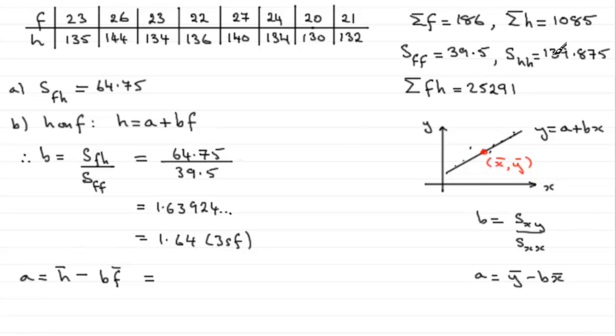Well, H-bar, the mean of H, is going to be the sum of H, divided by how many values we've got. So that's going to be 1085, divided by 8. And then we've got minus B, B being the value that we've just found. I'm going to use the unrounded version though, so it's 1.63924 and so on, multiplied by F-bar. F-bar, the mean of F, so we've got to just total F, 186 then, and divide that by how many values we've got, which is 8.